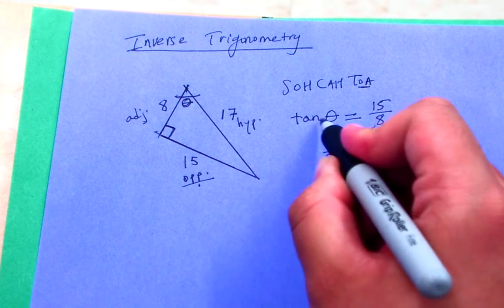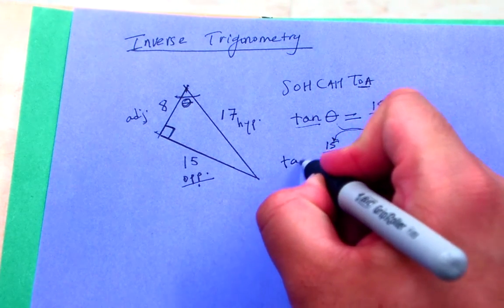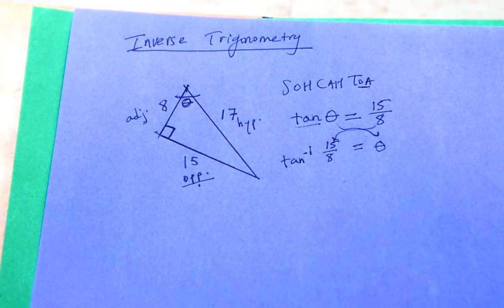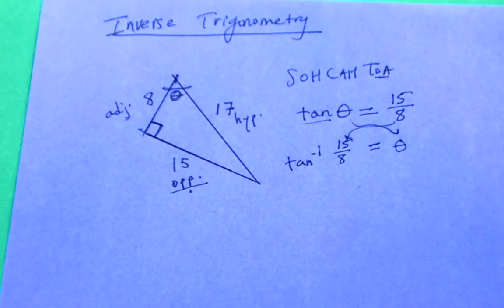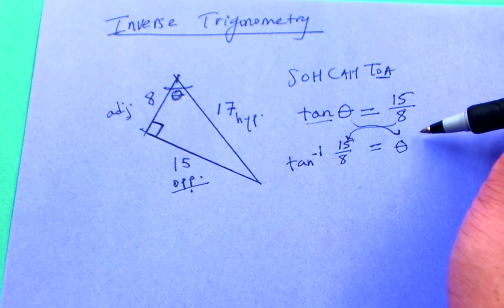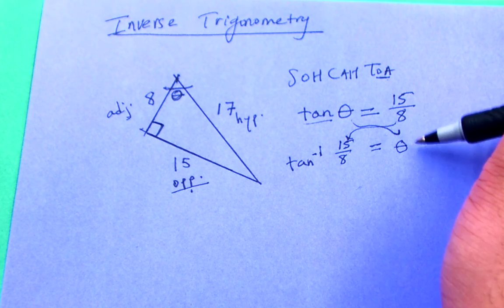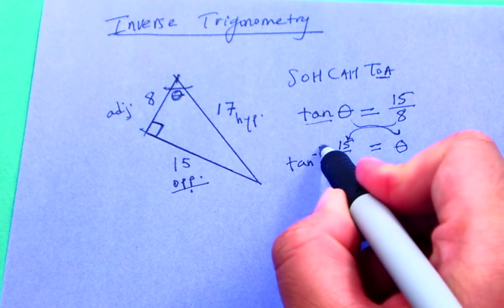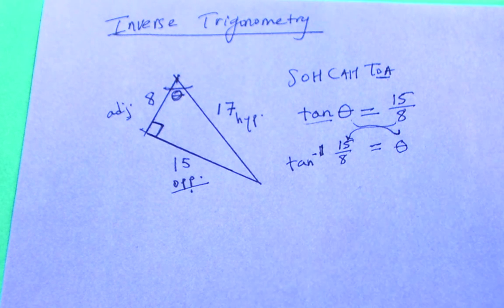15/8 will now be my input as opposed to my output. And rather than using tangent, I'm going to use something called inverse tangent. So effectively I've inverted my problem. If the line above here is all true, then so is this line here, because I've inverted everything in a sort of symmetric procedure here.